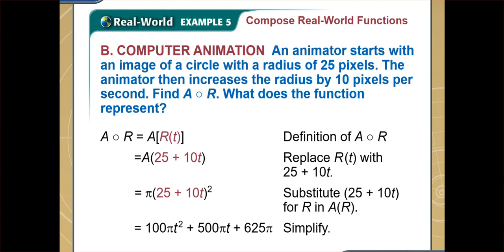The composition of two functions a and r equals 100π t² plus 500π t plus 625π. This formula will help us find the area of a circle for any given time t in seconds.